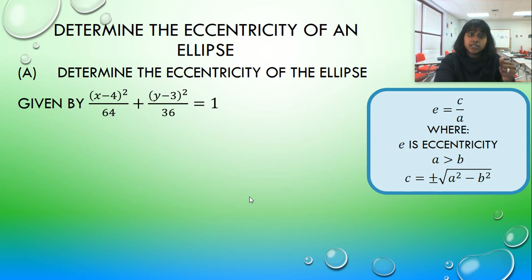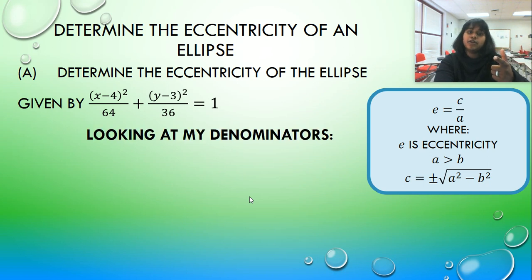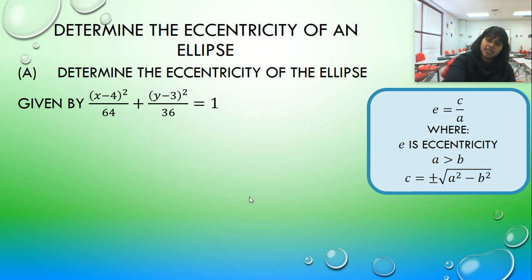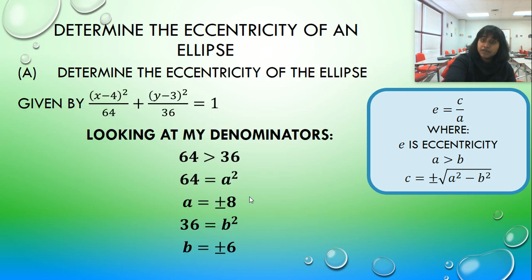So let's determine eccentricity of an ellipse. Remember, E is just equal to C divided by A. So I know my A value, I know my B value, I don't quite know my C value. A must be plus or minus 8, B must be plus or minus 6.